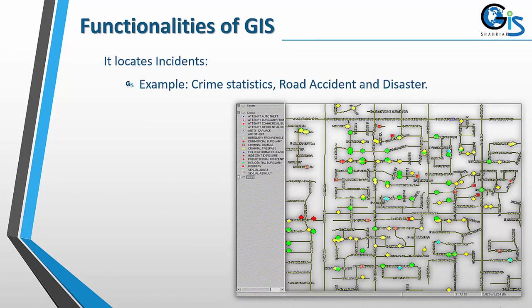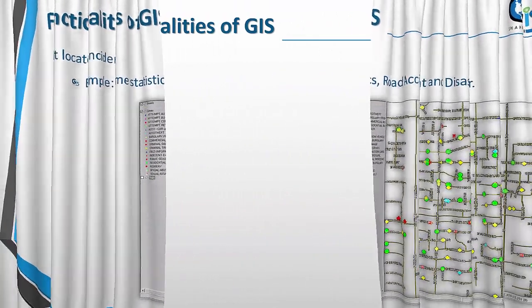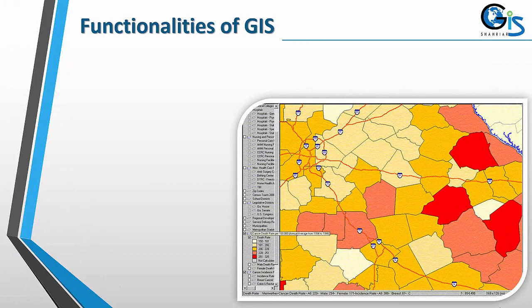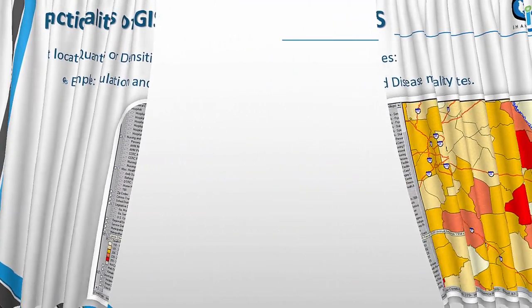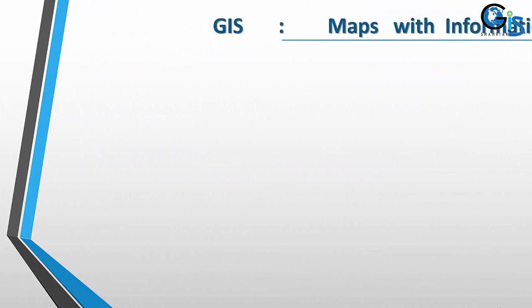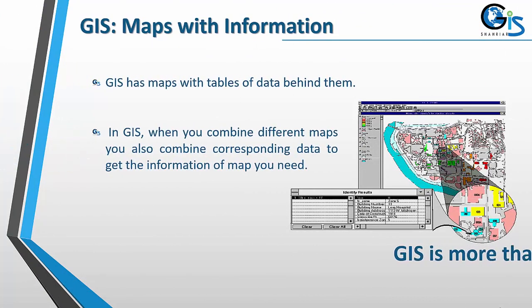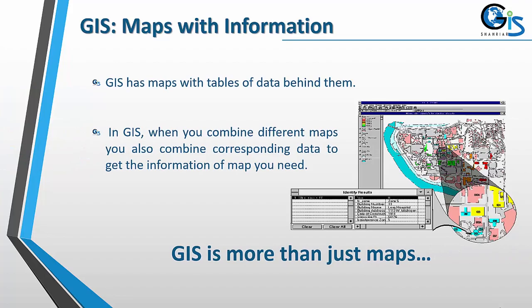GIS locates incidents — for example, crime statistics, road accidents, and disasters. It also locates quantities or densities — for example, population and disease mortality rates.